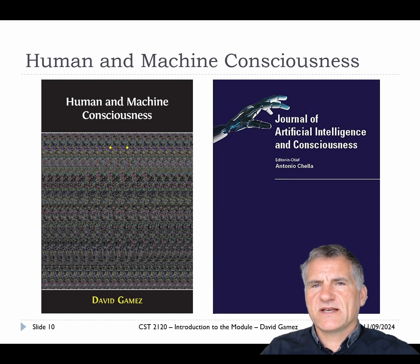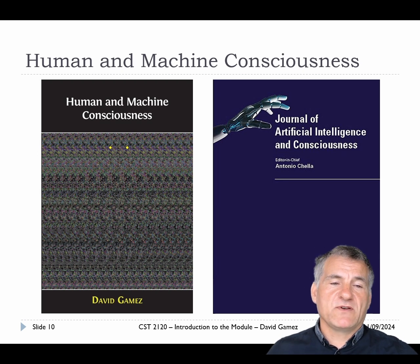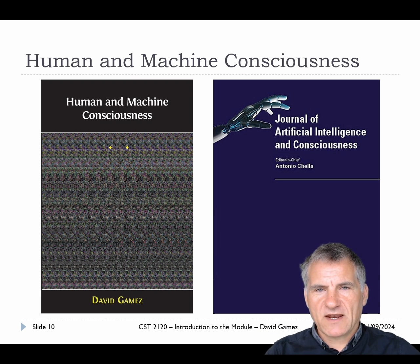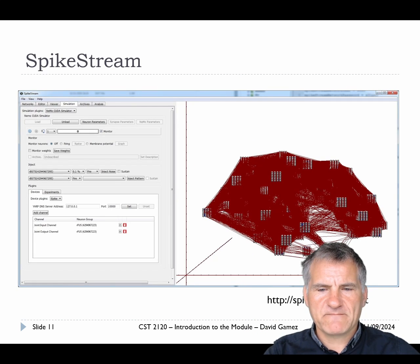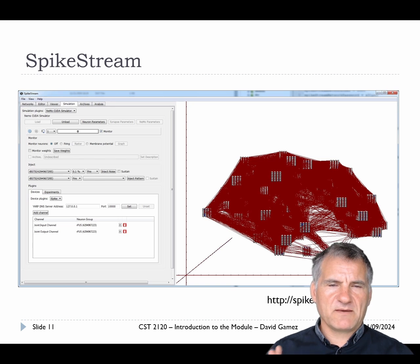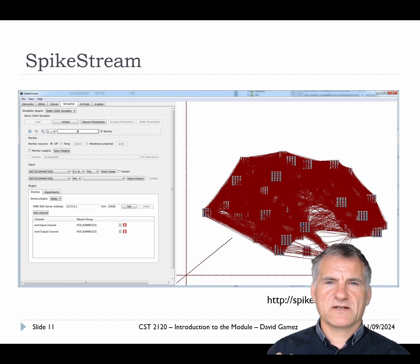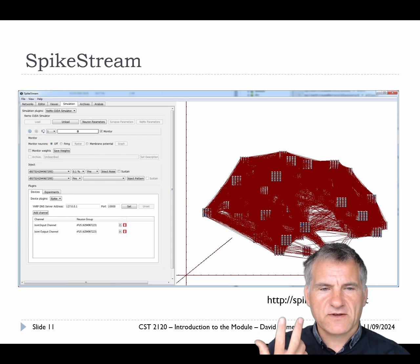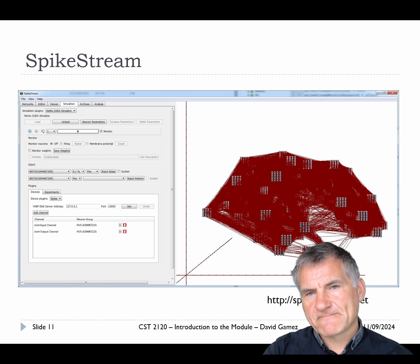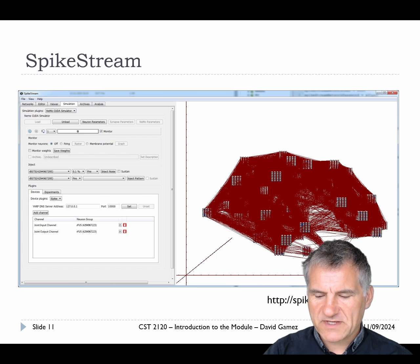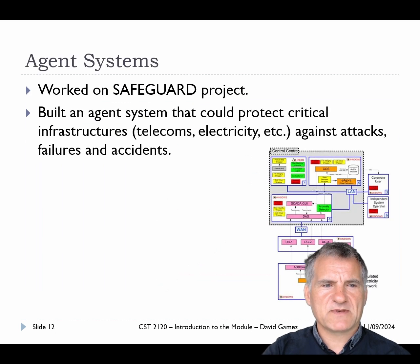I've done a lot of work on human and machine consciousness, and if you're interested, you can take a look at my book, available for free online — quite relevant in an era when we're talking about conscious machines and whether ChatGPT is conscious. I also spent quite a long time working on biologically inspired neural networks, trying to mimic what's going on inside your brain to build smarter AIs. I built a neural simulation modeling tool called Spike Stream, and Chris Huyck in this department is still working in this area.